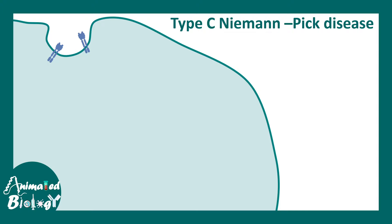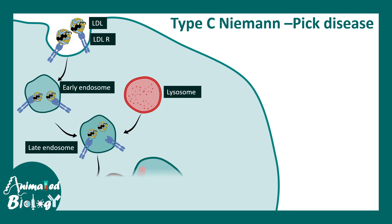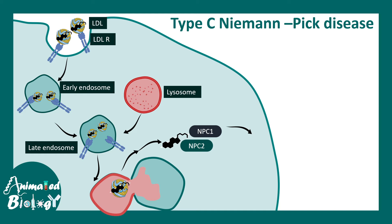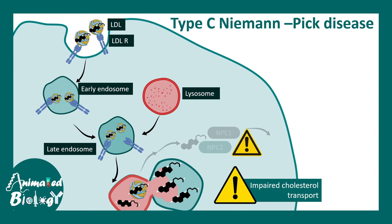In Niemann-Pick Type C, LDL is taken up by LDL receptors in early endosomes, forming late endosomes that fuse with lysosomes. From the phagolysosome, cholesterol is transported out via NPC1 and NPC2 proteins to the cell membrane as a component of the lipid bilayer. When NPC1 and NPC2 gene products are defective, this transport doesn't occur properly and cholesterol becomes trapped at the lysosomal stage, accumulating there and causing problems.